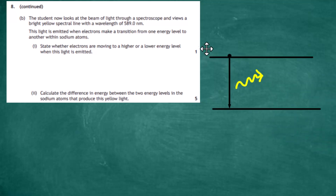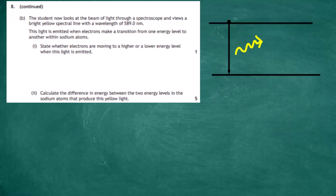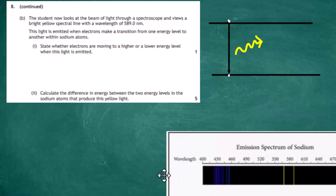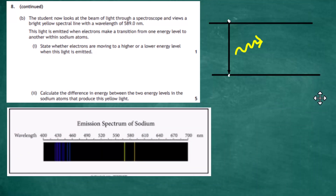In terms of energy level diagrams, the electron in order to emit light must go from the high energy level down to the low energy level, and then a photon of light is emitted with exactly the same energy as that energy gap. Because we're looking at the emission spectrum, light has been produced, and that can only happen if an electron gives up its energy going from a high to a lower energy state. The answer for one mark is simply that the electron is moving from a high energy state to a low energy state, giving off a yellow photon of light.